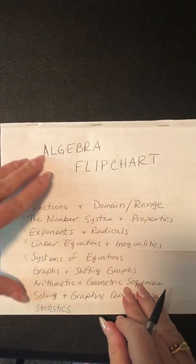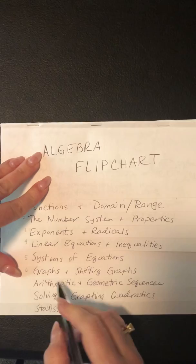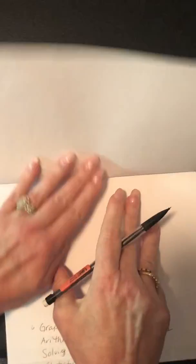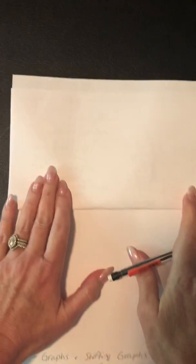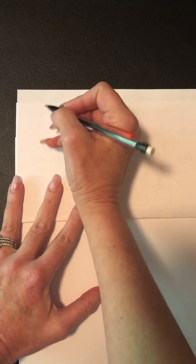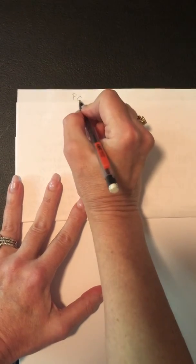Okay, so now we're going to do tab 6, and tab 6 is graphs and shifting graphs. So we're going to talk a lot about graphs and what they should look like, and there's lots and lots of different graphs. But in Algebra 1, the main ones, we're going to talk, first off we're going to talk about the parent functions.